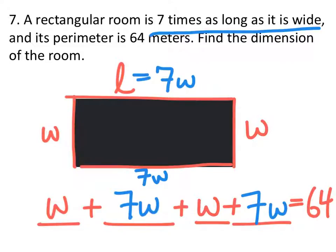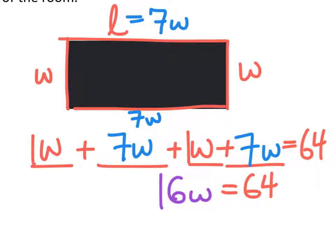Now if I look at this, I can combine all my like terms, which all four of these are like terms. Each of them has a w. I've got one w here and another there. If I combine them all, I end up with this 16w equals 64.